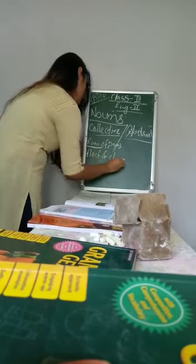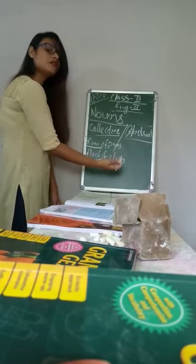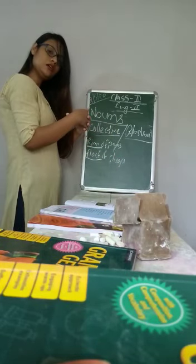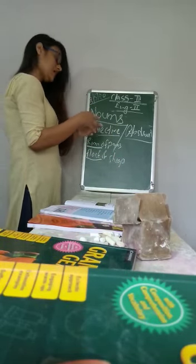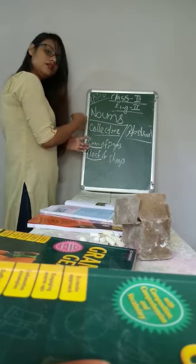That means this word implies a group. Flock of sheep means there are many sheep. So this is flock of sheep. So this is called a collective. When we name a group, similar things in one group, that is called collective noun. Collective, collection, together.